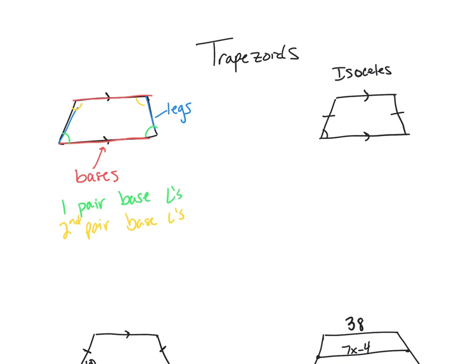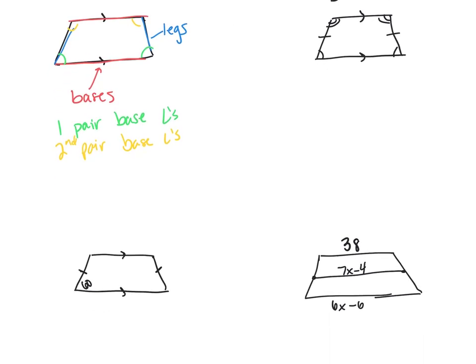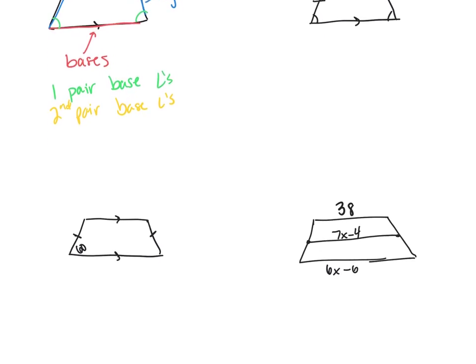It means our base angles, each pair is congruent, so the bottom two are congruent. Remember, the top two are congruent. So that kind of special angle relationship helps us find missing angle measures.